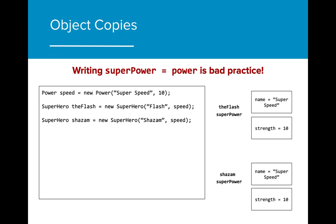Let's say we want to create a new superhero. We create a new power called speed that has the name super speed and the strength of 10. We then want to assign that power to two superheroes that have super speed, flash and shazam. We use the same speed power because we want both of them to get the same power to start off with.